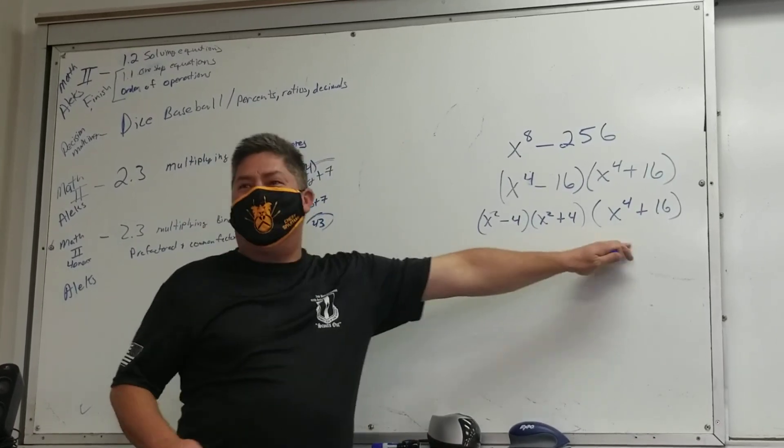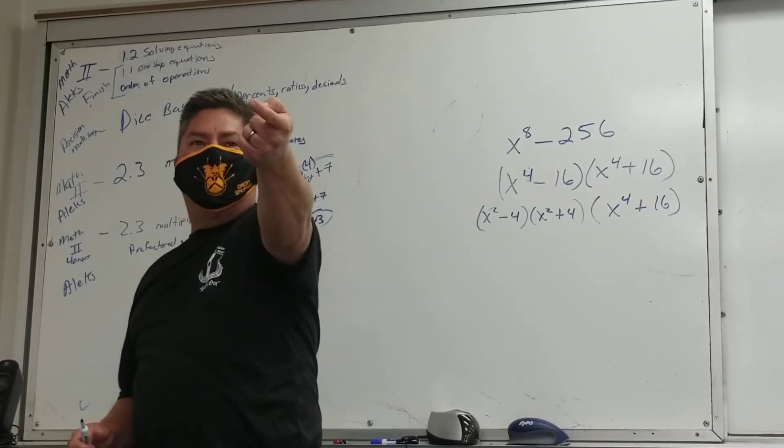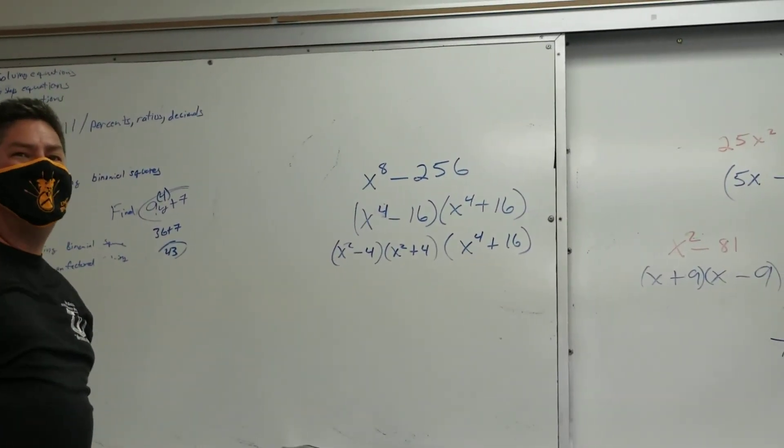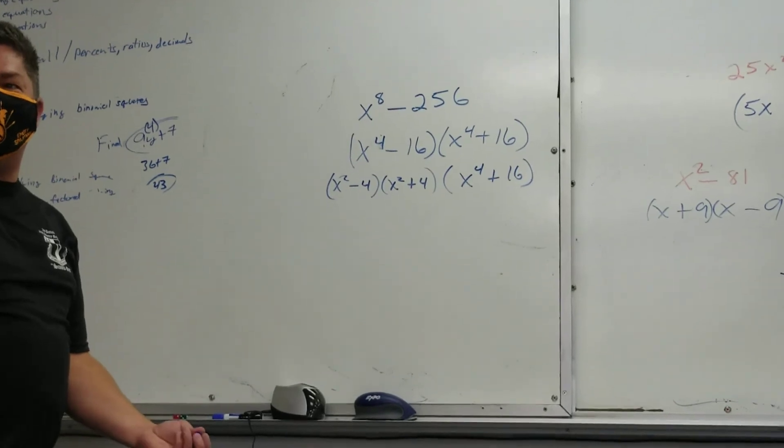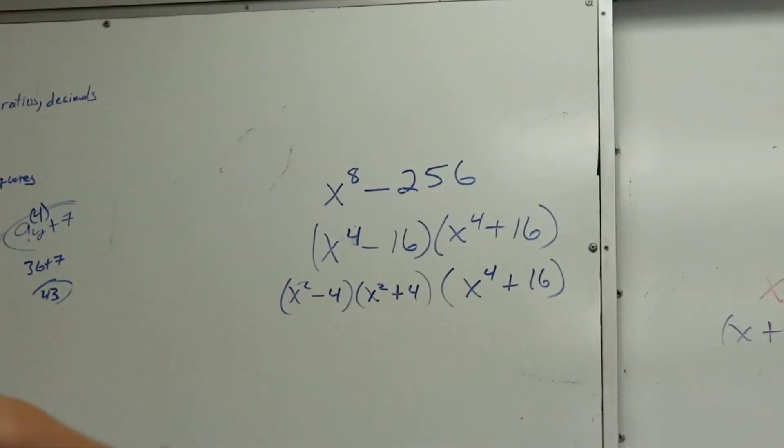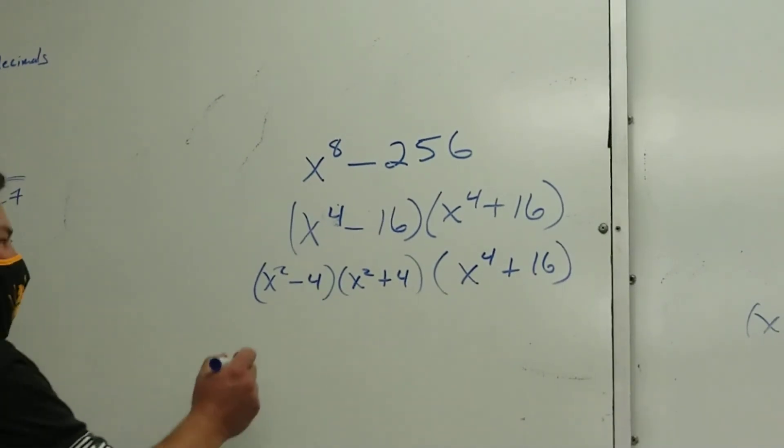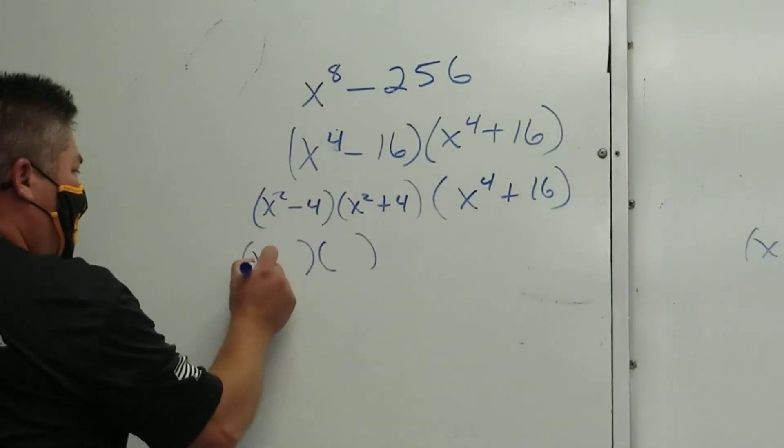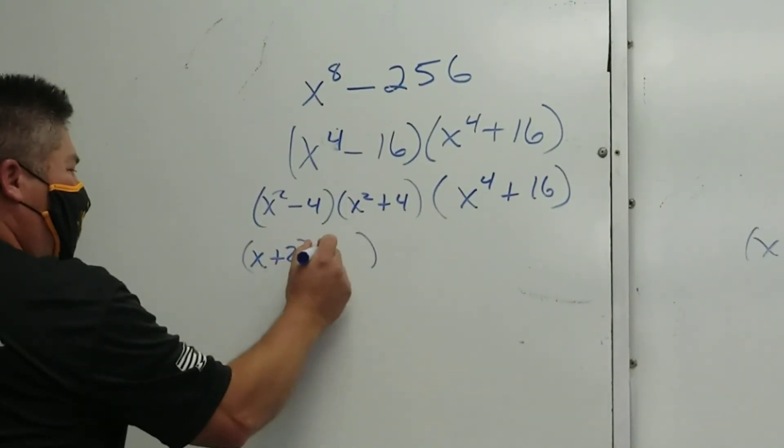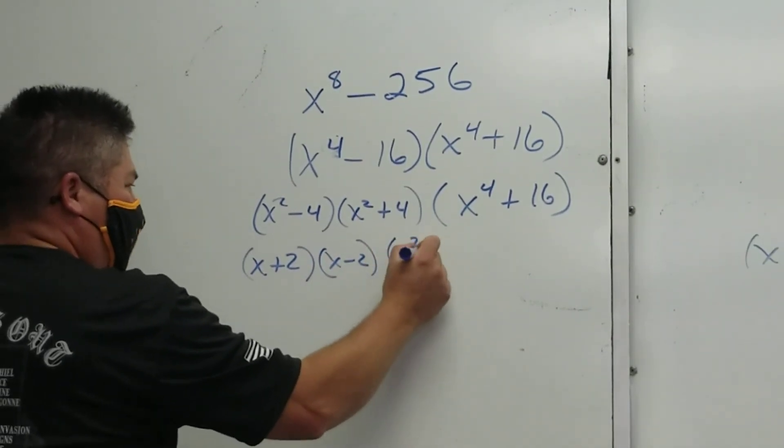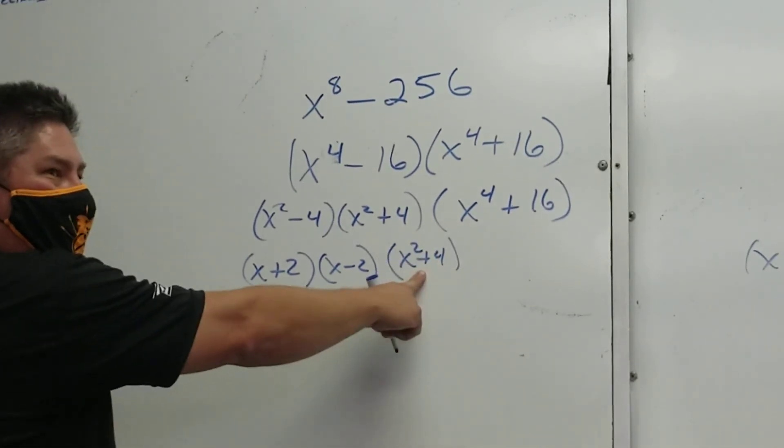All right. So am I done? McKenzie, it'll yell at me still. Why will it yell at me? Not factored completely. Why is it not factored completely? Difference of perfect what? Squares. This is what? x plus 2 and x minus 2. And then x squared plus 4. Can't factor that. It's a sum.